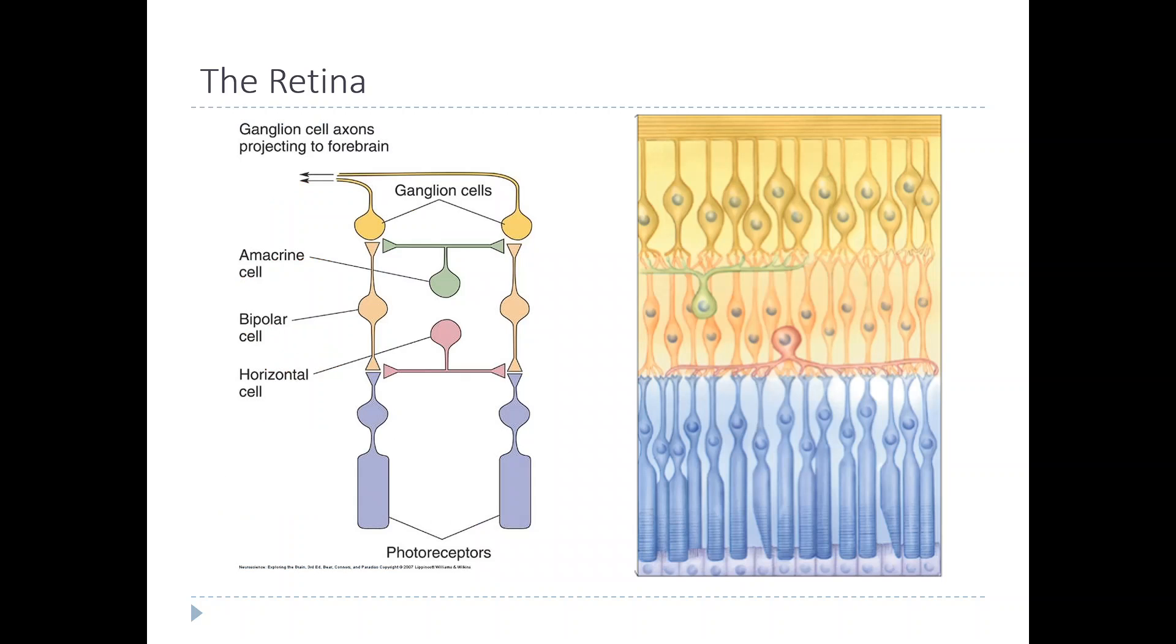This is how the cells of the retina are connected to each other. The photoreceptors, even though they're at the bottom, are the cells that actually detect light. The photoreceptors have outer segments that contain the photo pigments that react to light and create the transduction mechanism. Then they synapse directly with bipolar cells, and the bipolar cells synapse directly with retinal ganglion cells. The retinal ganglion cells send their information to the brain by the optic nerve.